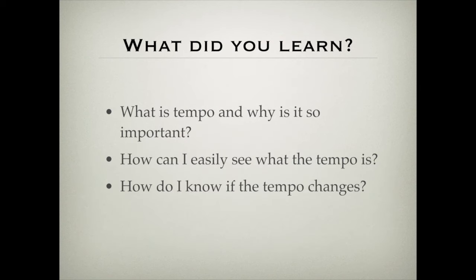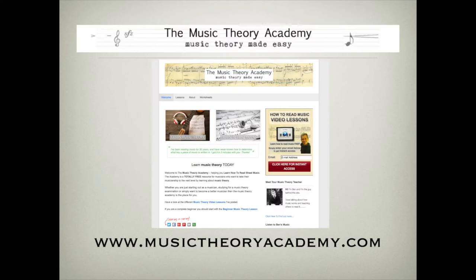So what did we learn? Tempo simply describes the speed of the beat or the pulse of the music. To see what tempo is, look out for tempo markings and metronome markings. To know if the tempo changes: if it changes suddenly, look for a new tempo or metronome marking. If it changes gradually, look out for those Italian words we covered. Hope you found that lesson helpful. Head over to musictheoryacademy.com and you'll find lots more video lessons and resources to help you on your musical journey.